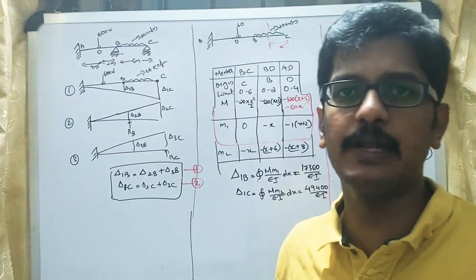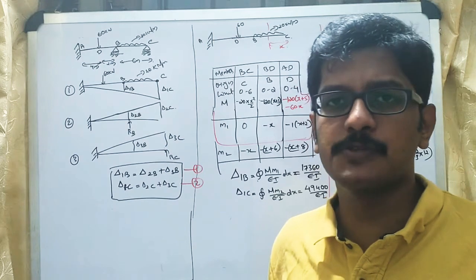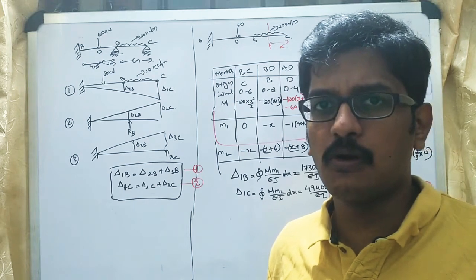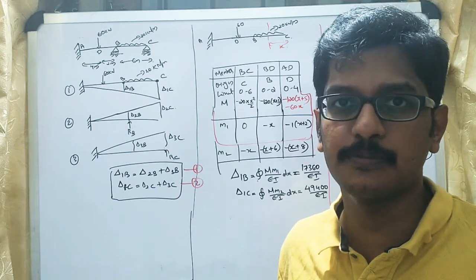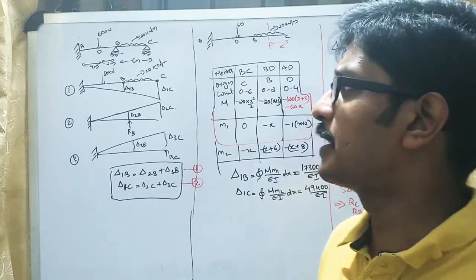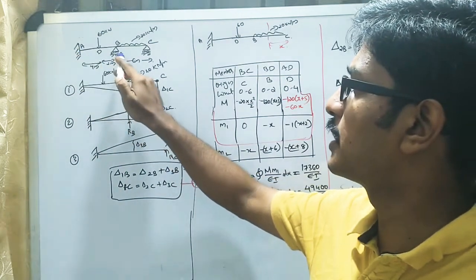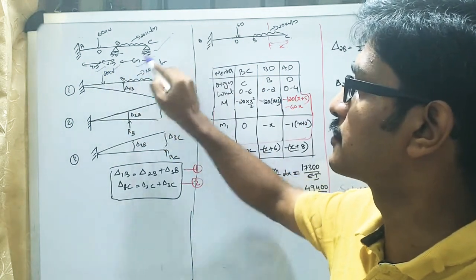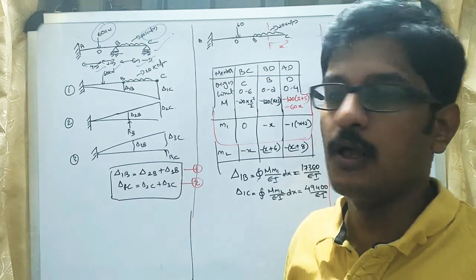Welcome to another video lecture. Today we will discuss beams having two redundants. Please watch the previous lectures where we discussed continuous beams having only one redundant. Today we will discuss beams having two redundant numbers. The question given has a fixed end support, one roller at B, and one roller at end, with distances of 4 meters, 2 meters, and 6 meters, and loads of 60 kN and 20 kN per meter.